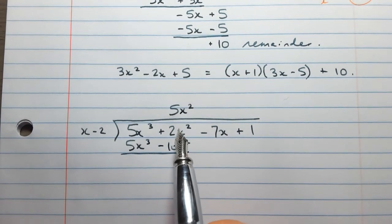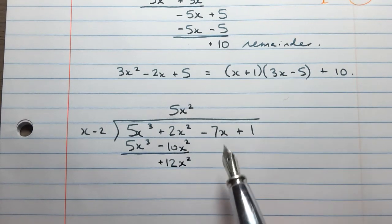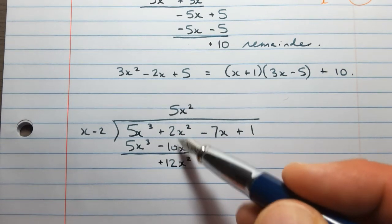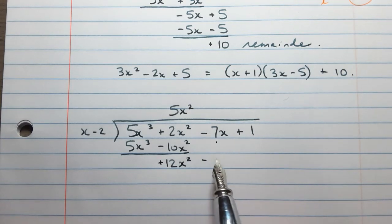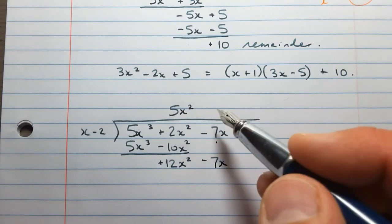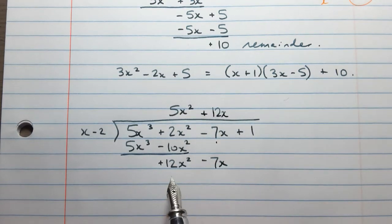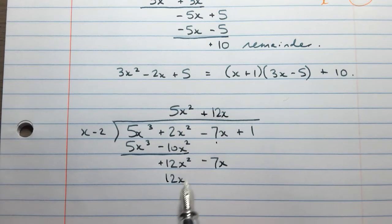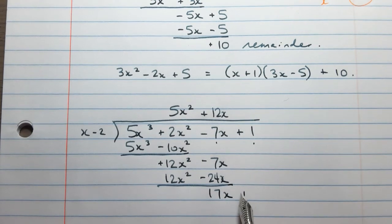5x cubed divided by x is 5x squared. So we write that above the squared column. 5x squared times x minus 2 will be 5x cubed and minus 10x squared. Subtracting, 0, but subtracting here we're going to end up with positive 12x squared. Let's bring down this negative 7x. 12x squared divided by x is 12x. 12x times x minus 2 gives 12x squared and minus 24x. Subtracting, I'm going to end up with positive 17x.